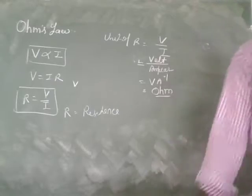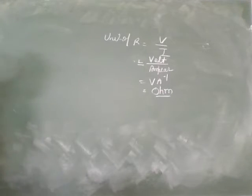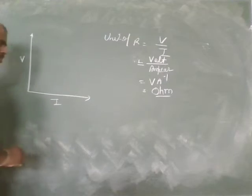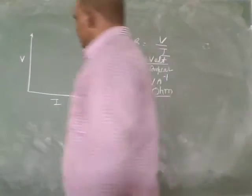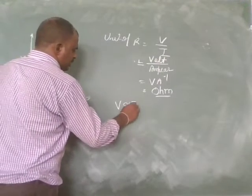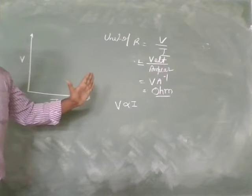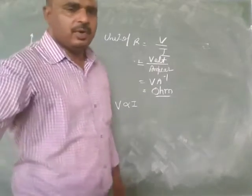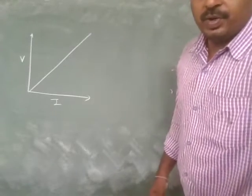For a graph between V and I — suppose this is V on the y-axis and this is I on the x-axis. What should the shape of the graph be? Since V is proportional to I, as the value of I increases, V increases. So the graph will be a straight line between voltage and current.